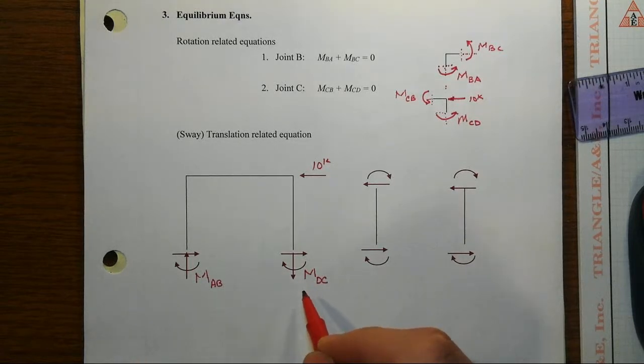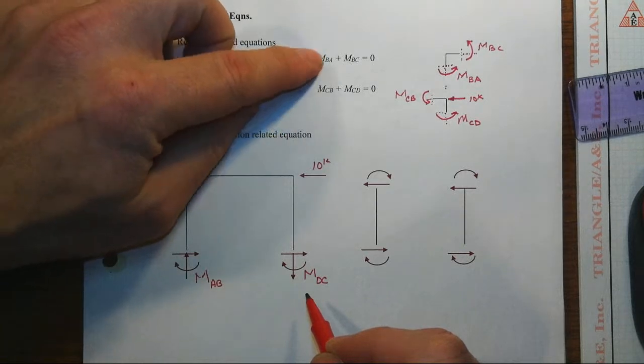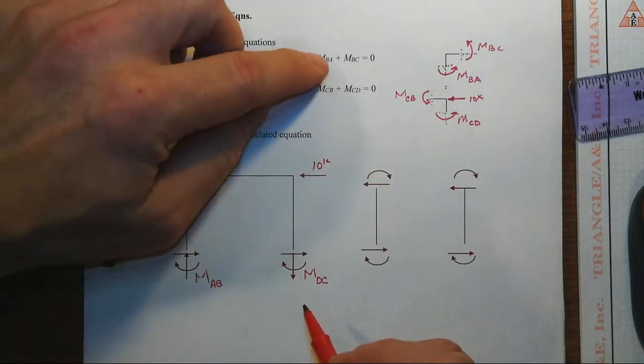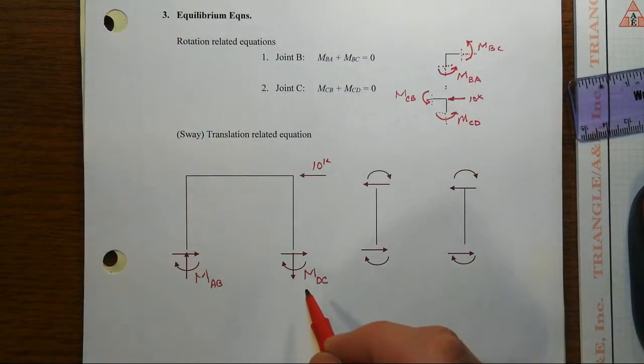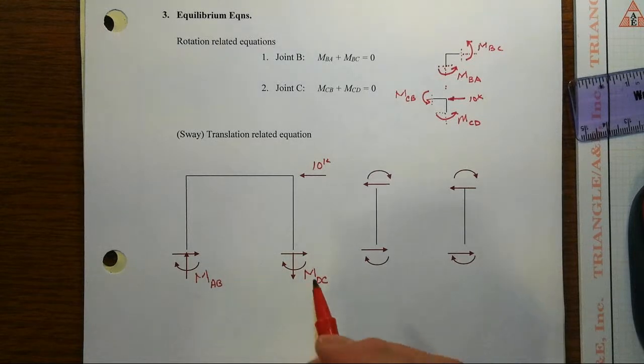That's the ones that we really want to deal with here: MAB and MDC. We want to deal with these because they're the ones that are associated with the slope deflection equation, and that's what we want to get there.